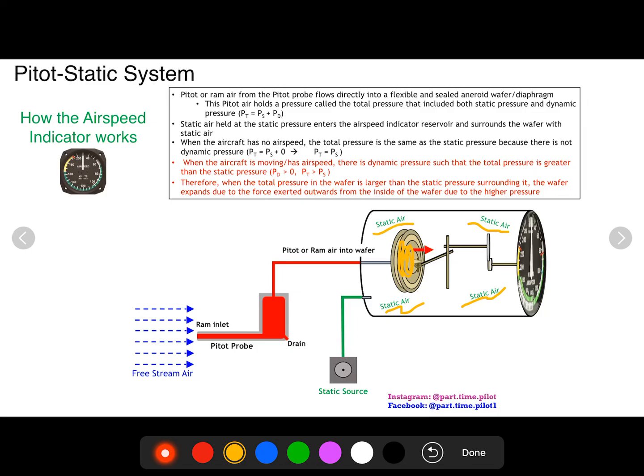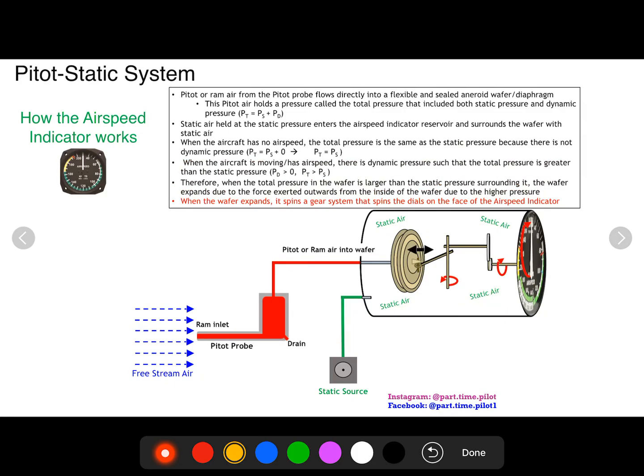So what happens in the airspeed indicator is the total pressure inside the diaphragm is bigger than the static surrounding it. Higher pressure wants to go to lower pressure, so the pressure inside this wants to get out. The air molecules want to get out into the static air, but it's completely sealed, so it exerts a force on the inside of this diaphragm, pushing this diaphragm out and it expands. Now when this diaphragm expands, as you increase your dynamic pressure and your velocity, it spins a gear system which spins the dial on the airspeed indicator, giving you an airspeed reading.